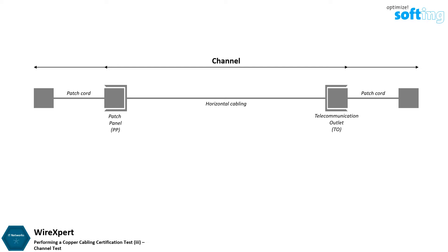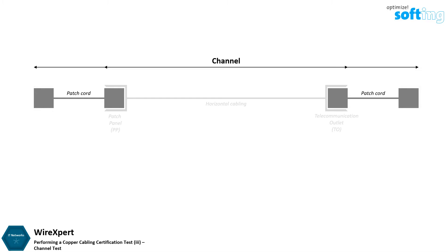A patch cord or patch cable is the length of cable with connectors on the ends that is used to connect a wall outlet to an end device, such as a workstation or switch. The typical length for these patch cords is 2 meters, up to a maximum of 5 meters.